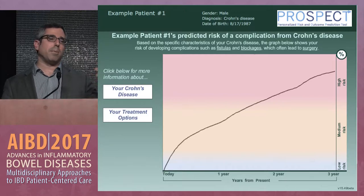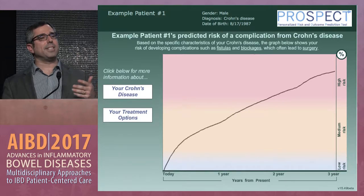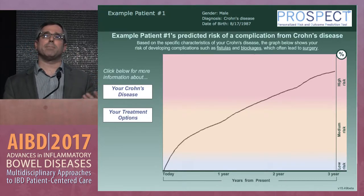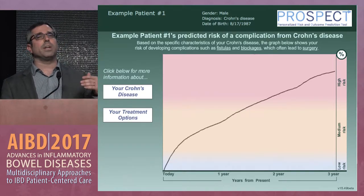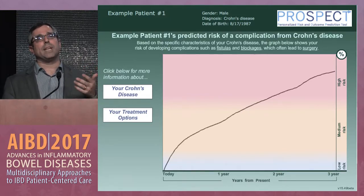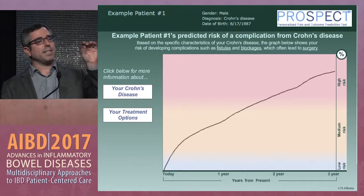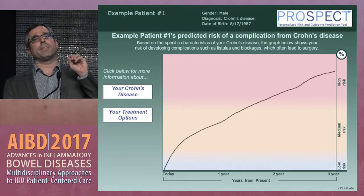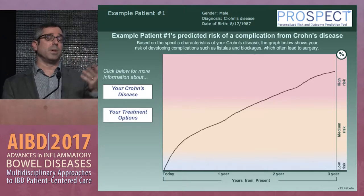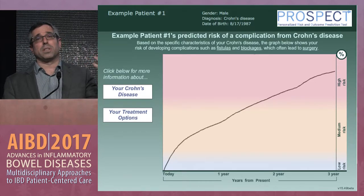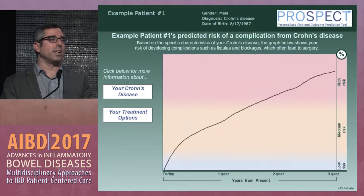Essentially we've taken complex clinical data and turned it into patient-friendly results so we can sit with our patients and help them understand. The model is color-coded — and in fact the percentages on the y-axis were taken away because patients told us they didn't really care if it was 82% versus 69%; they simply wanted to know if they're at high, low, or intermediate risk. It's personalized with their name on it and specifically calls out what complications we're working to prevent.